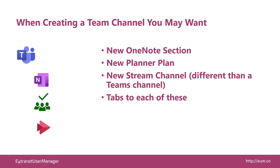As we're creating a new project for that client, we create a new team channel. We create what's called a section in OneNote, so we have sections for every project to keep it organized. We may decide to use Planner for that project, so we want our buckets and tasks in there. We may want a channel in Stream — which is different than a Teams channel — but keeps it organized. And again, we want all the tabs set up around that.